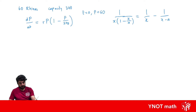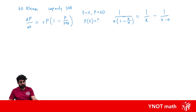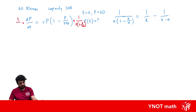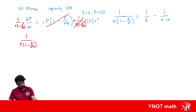The first thing we're after is a function of the population in terms of time. We're going to multiply both sides of the equation by 1 over p times 1 minus p over 240. The same on the other side, so everything cancels and we have 1 over p times 1 minus p over 240 dp.